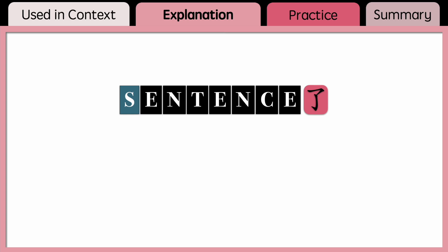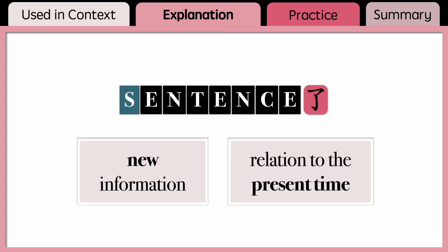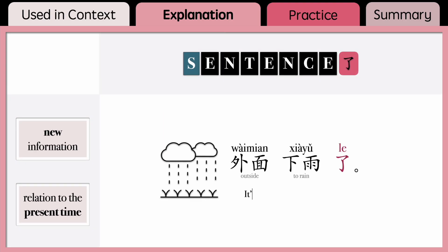We learned in the other video that when 了 comes at the end of a sentence, it prompts new information. What I want to bring to your attention in this video is that not only does 了 at the end of the sentence express the speaker's perceived new information, but it also indicates relation to the present time. For example, in the sentence 外面下雨了, the speaker prompts new information that it's raining outside — not in the past or future, but in the present. The speaker is expressing the new realization that it is raining outside now.